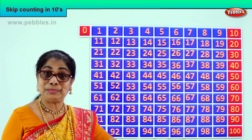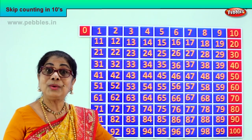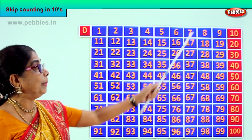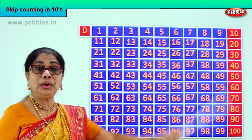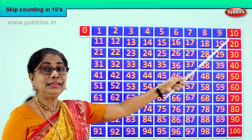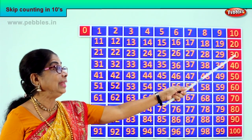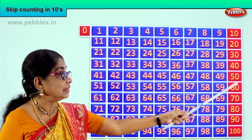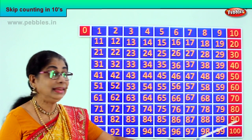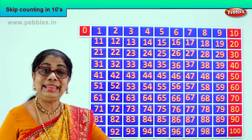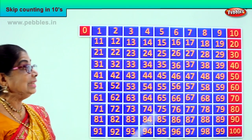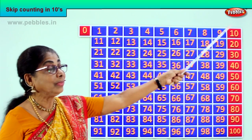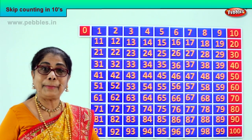Ten times we jump. What are we doing? Counting in ten. Look at the pattern: all end in zero — 10, 20, 30, 40, 50, 60, 70, 80, 90, and 100. In skip counting from zero to 100, look at the pattern.